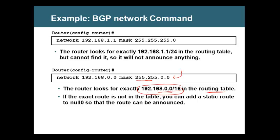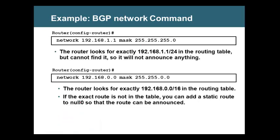If you don't put the mask, it will be the default mask. Put 0, not 1. If the route — for example 192.168.1.1 slash 24 — is not found in the routing table, it will not be announced. These things need to be remembered whenever you use the network command.